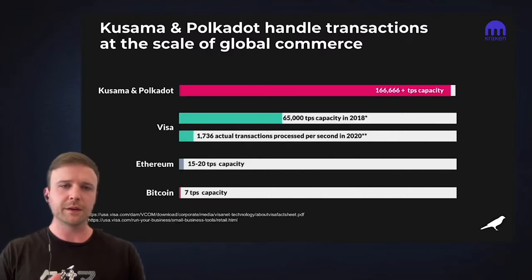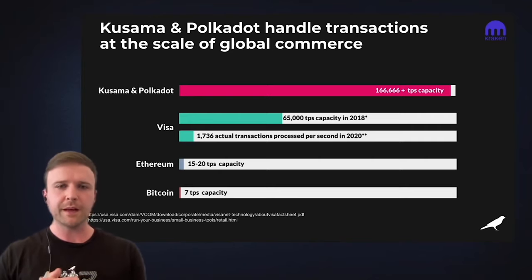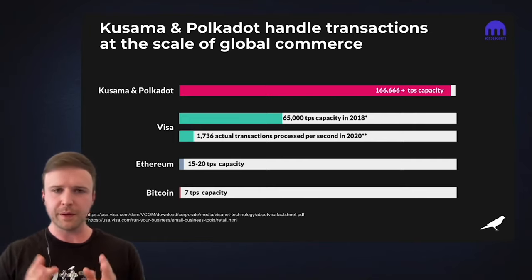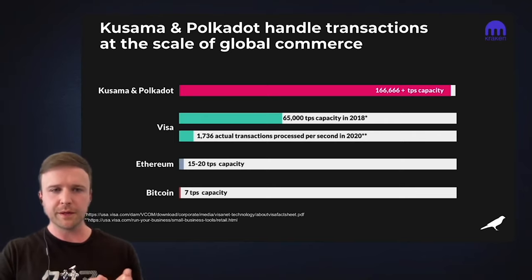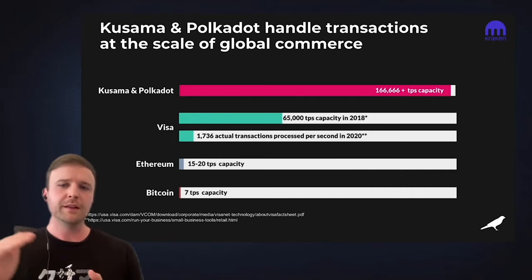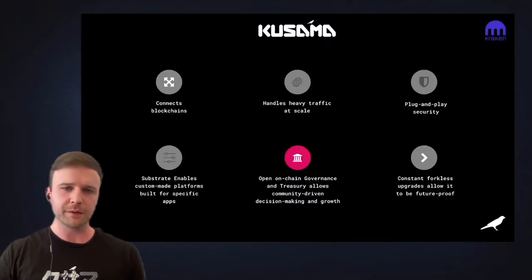On scale: research done with the Web3 Foundation research team found that the theoretical capacity of Kusama and Polkadot is around 167,000 transactions per second. Compared to Visa's existing transaction processing and to Ethereum and Bitcoin — Bitcoin has a pretty significant distance — this shows there is a lot to come in terms of the ability to scale these platforms as more parachains and applications launch.